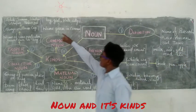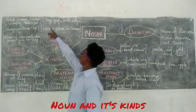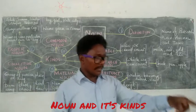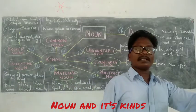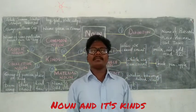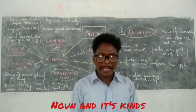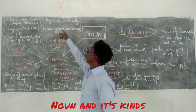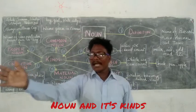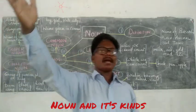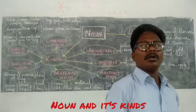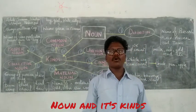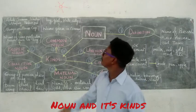Look at the examples. Boy — Ram, Raju and Ranjan. What is common among them? Boy, because all are boys. Girl — Sita, Gita and Amisha. What is common among them? Girl, because all are girls.